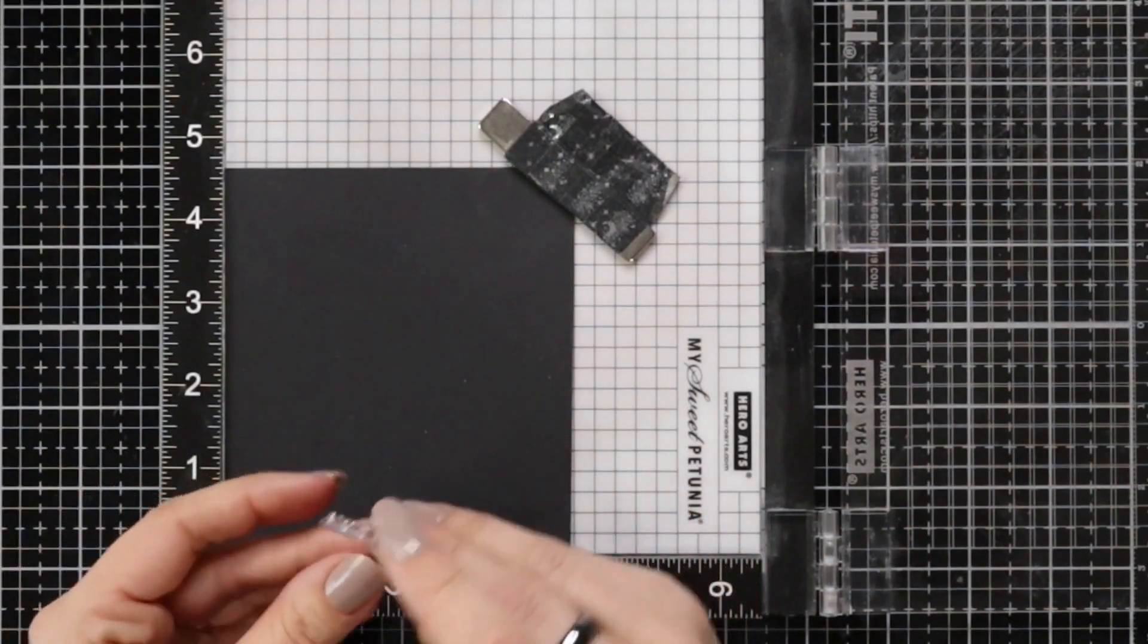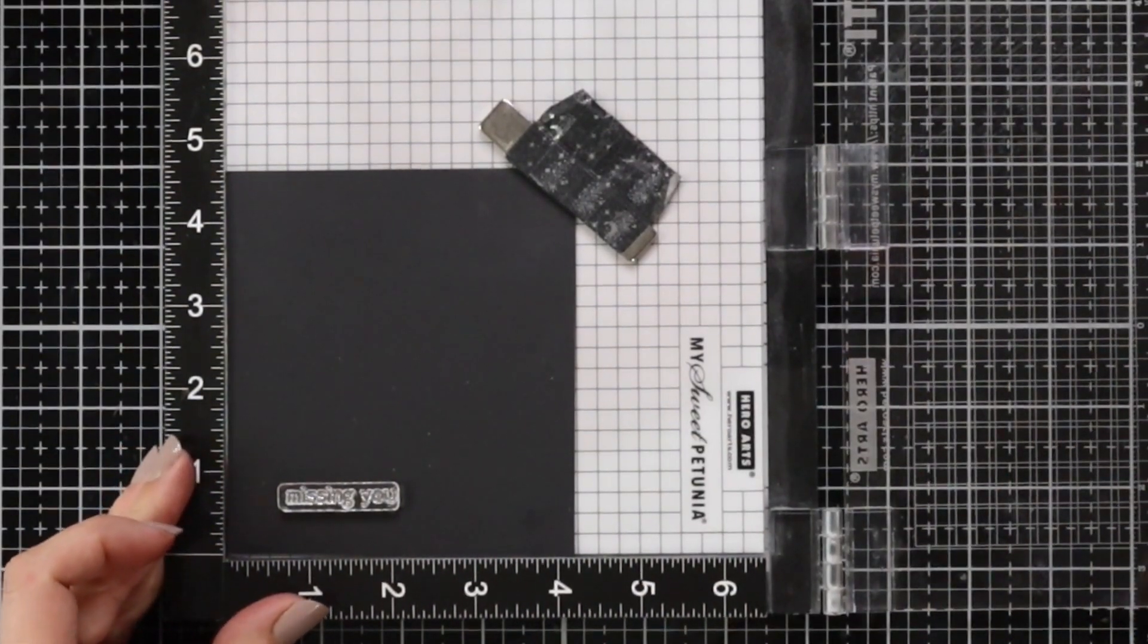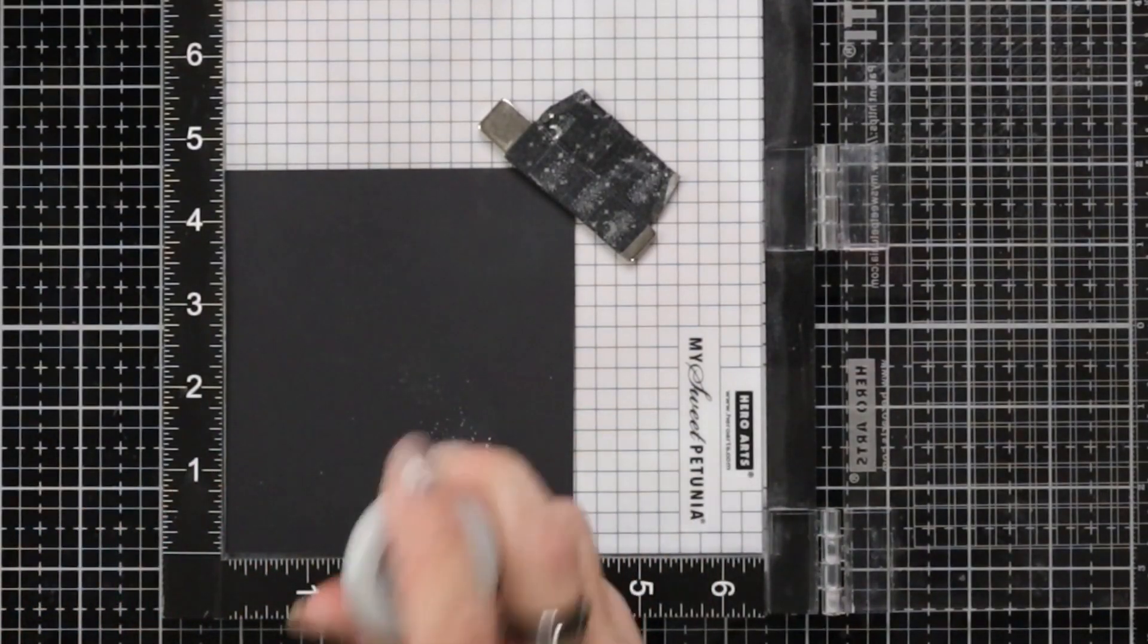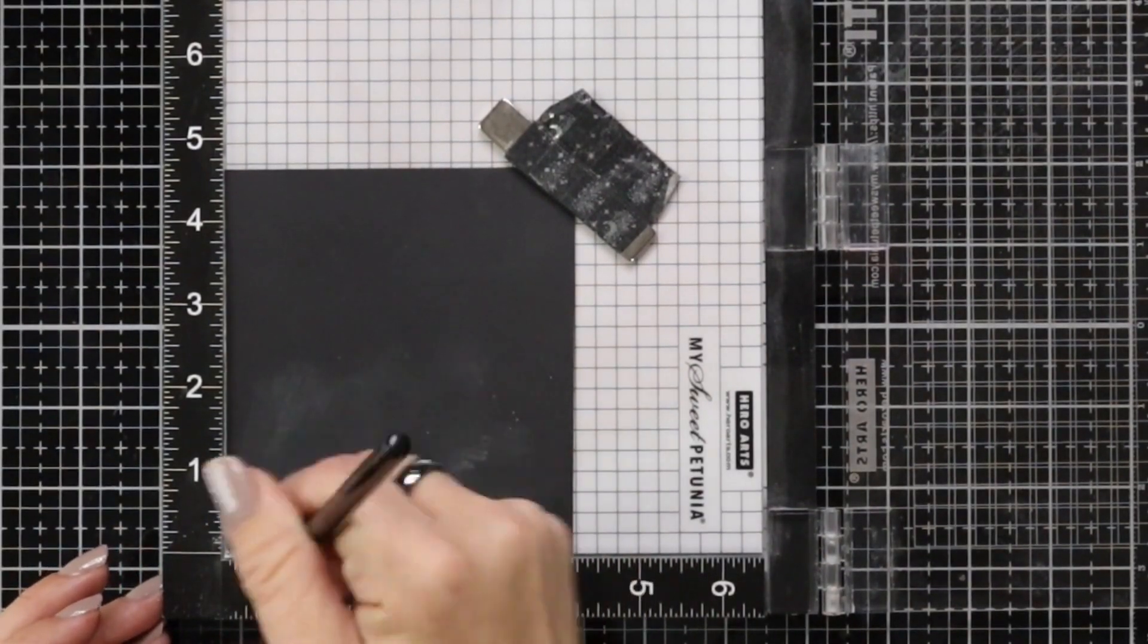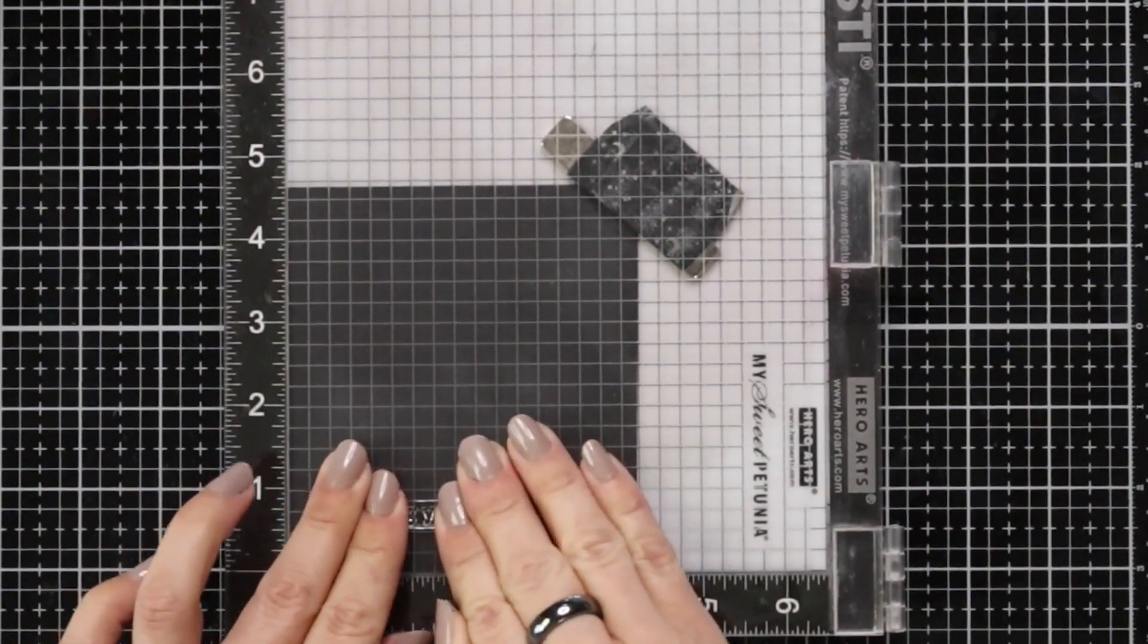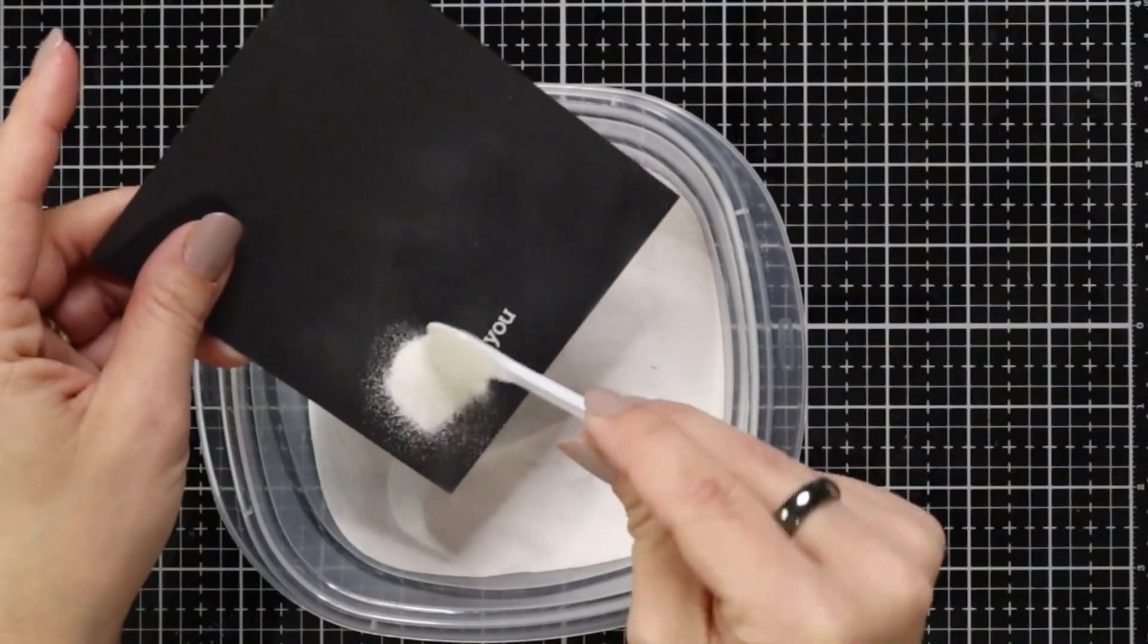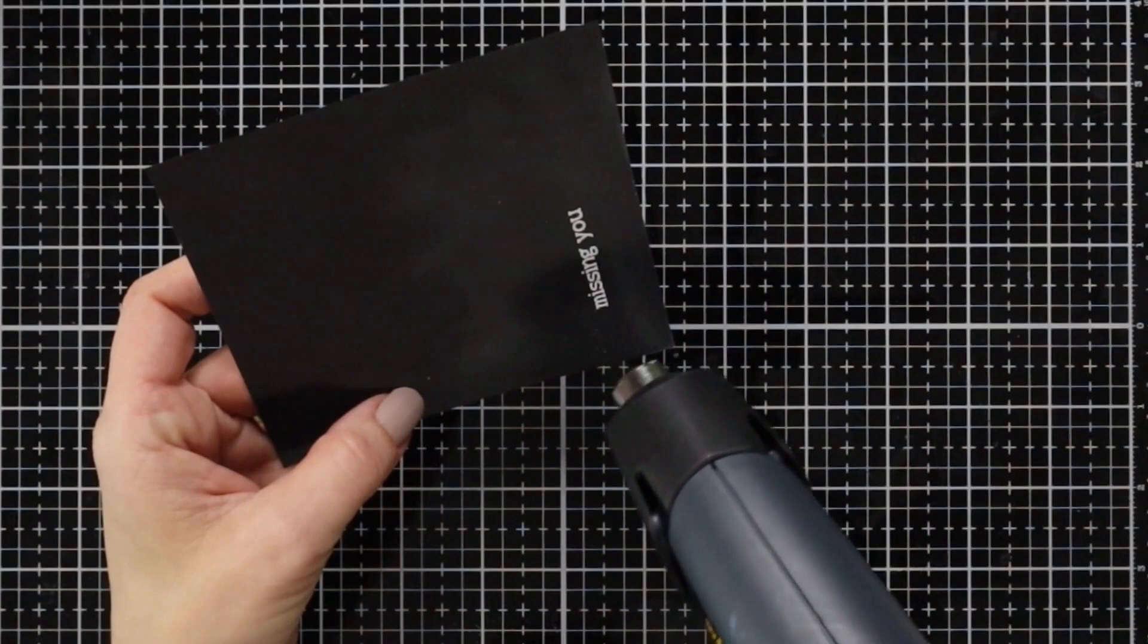So while my background is drying I'm going to work on a sentiment. I am using this missing you sentiment off of the pretty postage stamp set. Lining that up onto some black cardstock and I'll pick that up with the door of my Misti. I'm going to prep my cardstock with an anti-static powder tool just to make sure that the embossing powder only sticks to my embossing ink. I'm inking it up with Versamark which is a great embossing ink and I'm just going to carefully press that down. You don't want to apply too much pressure because then you could smush your letters and then I'm going to take it and sprinkle on some white embossing powder tapping off any excess back into my container and I'm going to heat this up and melt it with my heat tool.